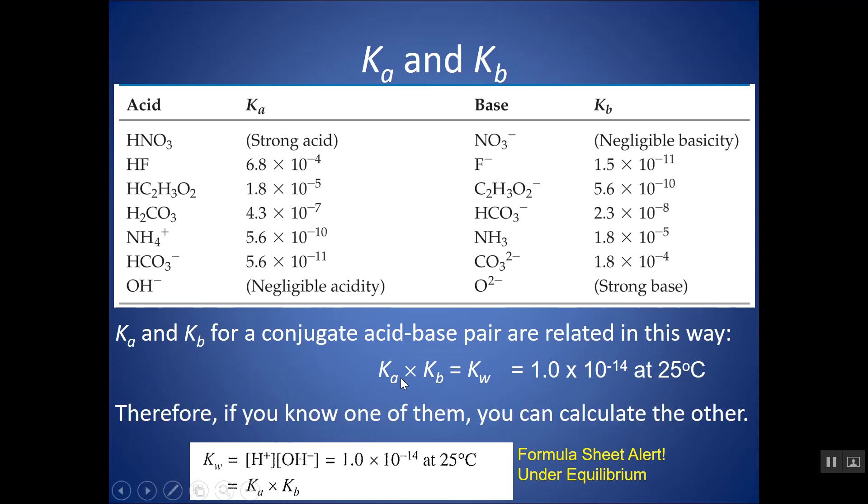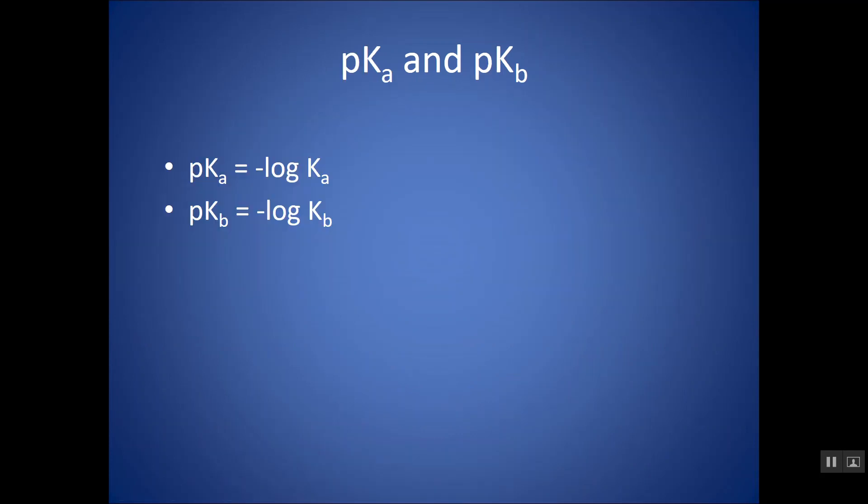So if you know one of them, you can always calculate the other that's missing. If you know the acid's Ka, you can find the conjugate base's Kb, and vice versa.